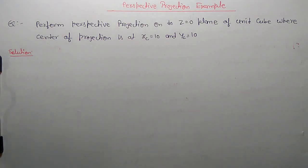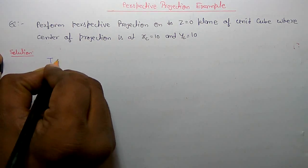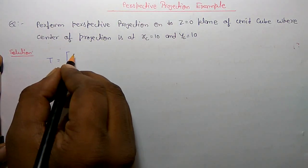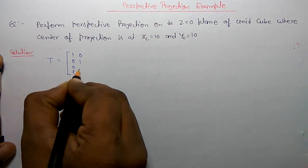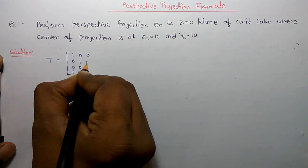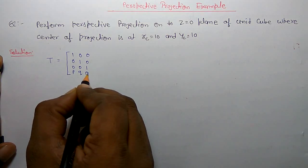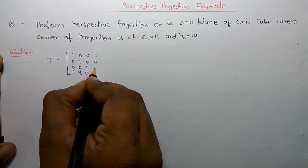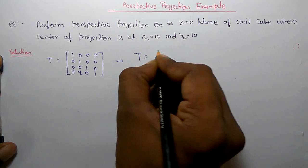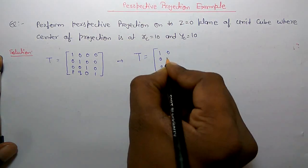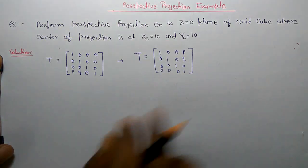I'm going to see one example on perspective projection. This is two-point perspective projection because XC and YC is given. For two-point perspective projection, the transform matrix is in column measure order P, Q, and because ZC is not given it is two points, so that's why it is zero. Otherwise if ZC is given it is R, one. This is in column measure order and in row measure order the transform matrix is this.